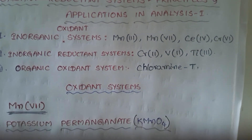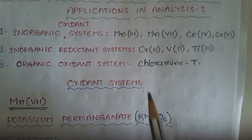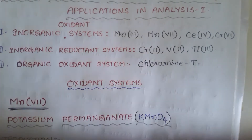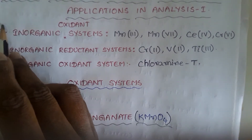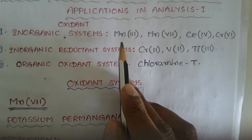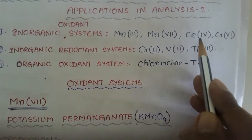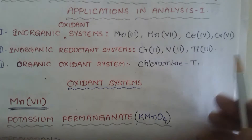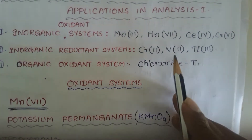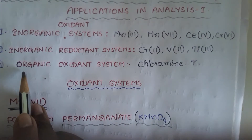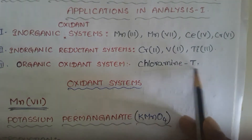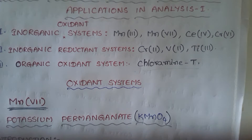In our syllabi, we have totally 8 oxidant and reductant systems in three categories. First, inorganic oxidant systems: Mn3, Mn7, Cerium(IV), and Chromium(VI). Next, inorganic reductant systems: Chromium(II), Vanadium(II), and Titanium(III). And then organic oxidant systems — only one example, that is Chloramin-T.